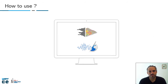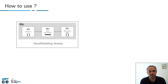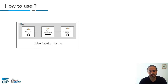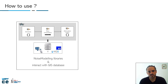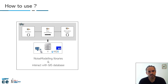How to use noise modeling: first, you can use only the noise modeling libraries by calling them in your Java program. The second way is to use the noise modeling library and interact with GIS databases, for example using Groovy script. Groovy is a kind of Java language but much easier to write.